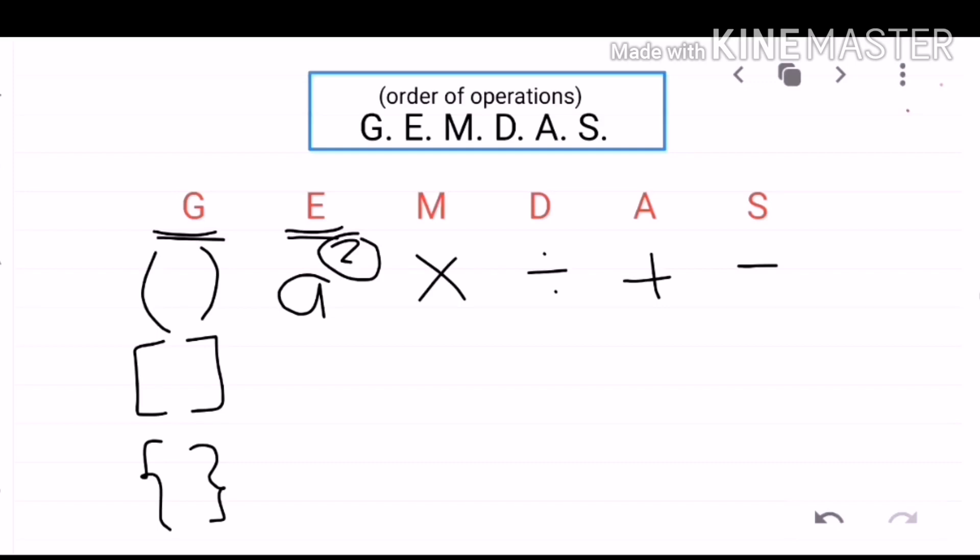Between MULTIPLICATION and DIVISION, whatever comes first from the left of the equation should be done first. If you see that DIVISION comes first before the multiplication from the left of your equation, then you must do DIVISION first.